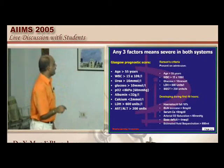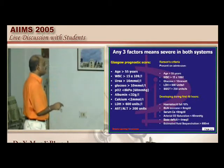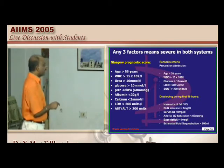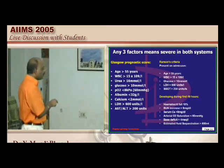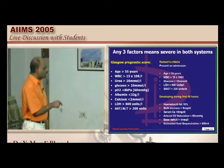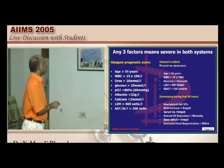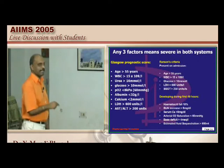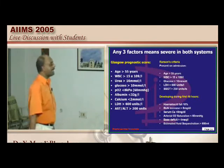Glasgow prognostic scale for pancreatitis includes WBC, urea, glucose, and PO2 (partial pressure of oxygen — a distinction from Ranson's which uses pulse oximetry saturation). Calcium and LDH are important in both. AST and ALT levels are also important. This is the Glasgow prognostic scale.